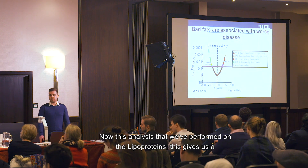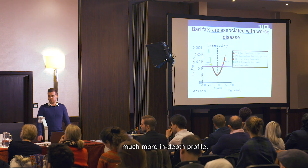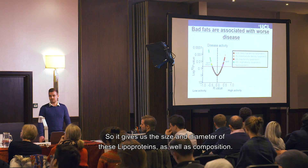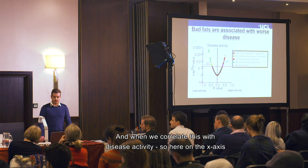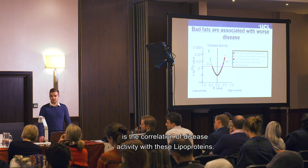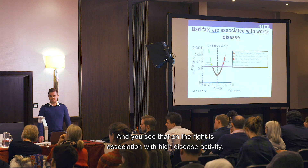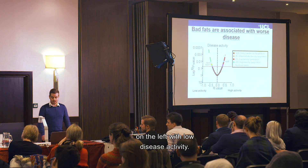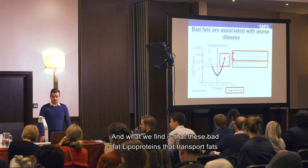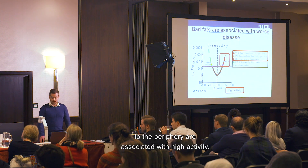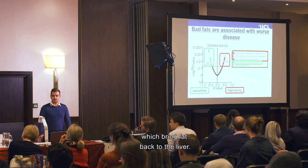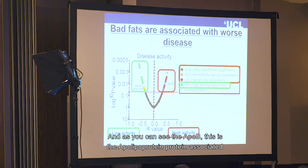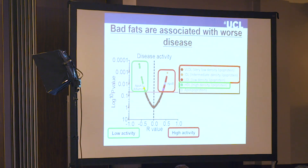The in-depth lipoprotein analysis gives a much more detailed profile, including size, diameter, and composition. When correlated with disease activity — high activity on the right, low activity on the left — we find that bad fat lipoproteins transporting fats to the periphery are associated with high disease activity, while low activity is associated with more high density lipoproteins. APOB is the apolipoprotein associated with bad lipoproteins and APOA1 with HDL.